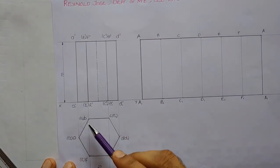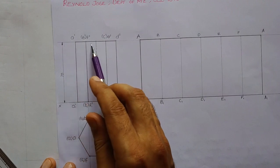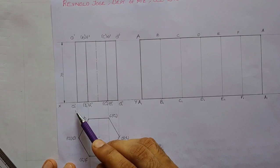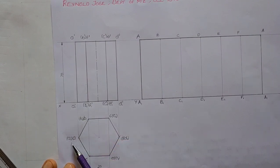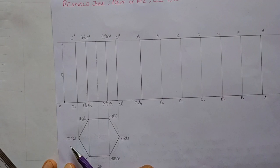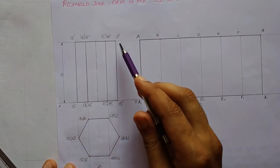The ant travels to the diametrically opposite corner of the top face. The top face has corners A, B, C, D, E, F. Since the ant starts from A1, the diametrically opposite point on the top face is D. So the ant starts at A1 and ends its travel at point D.